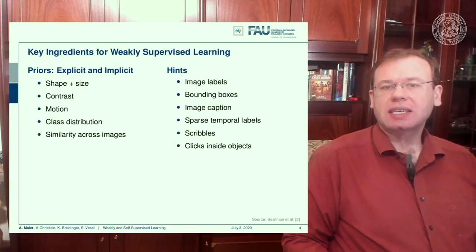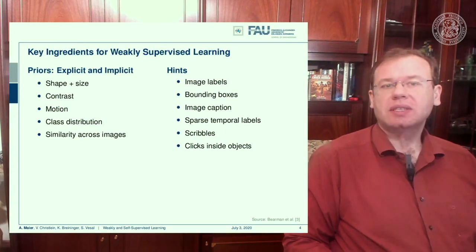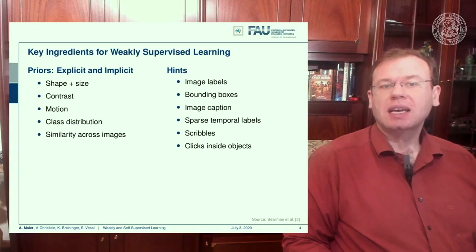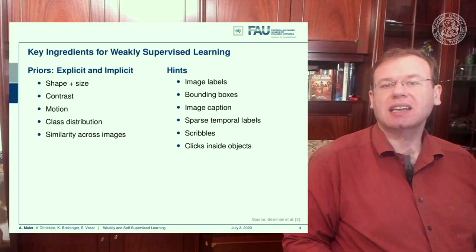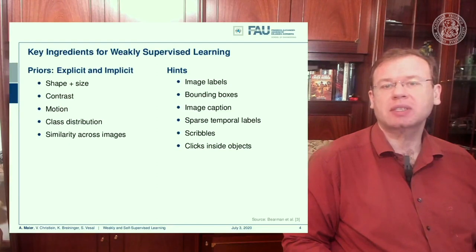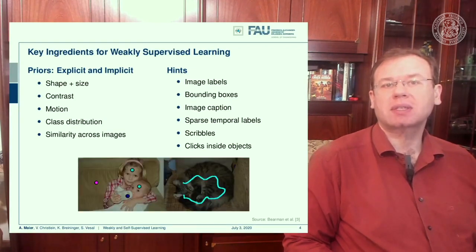The key ingredients for weakly supervised learning are priors — explicit and implicit priors about shape, size, and contrast. Motion can also be used, for example to shift bounding boxes. Class distributions matter too, since some classes are much more frequent than others, as well as similarity across images. You can also use hints like image labels, bounding boxes, image captions as weakly supervised labels, sparse temporal labels propagated over time, and scribbles or clicks inside objects.